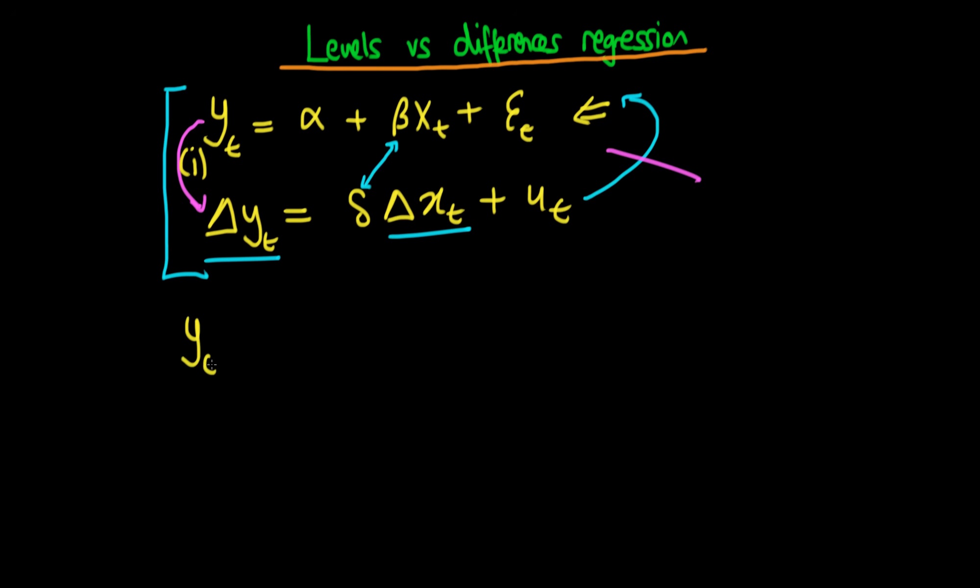Essentially what we do is we take yt minus yt-1, and that's just equal to alpha plus beta times xt plus et. Now substituting in for yt-1, I've still got an alpha in yt-1 and then I've got a minus beta times xt-1 plus et-1.